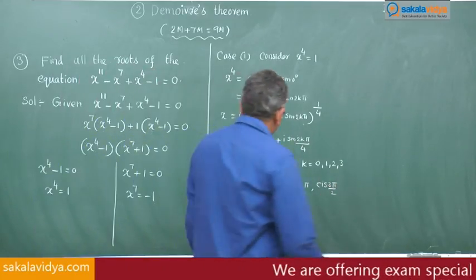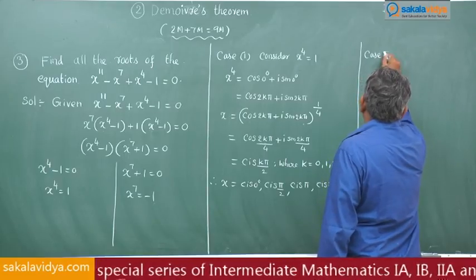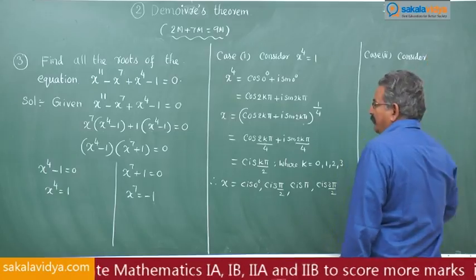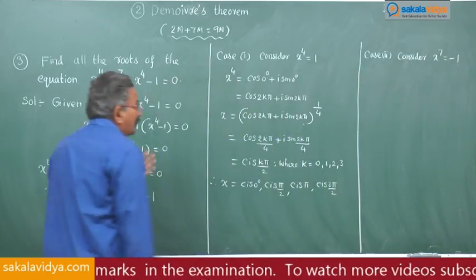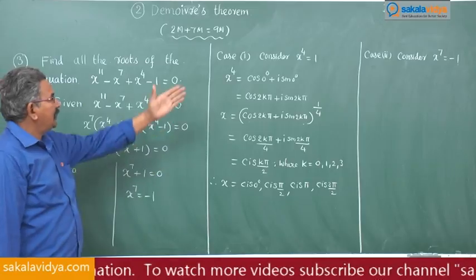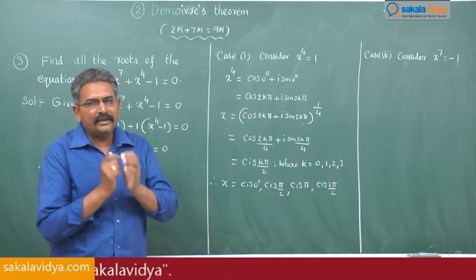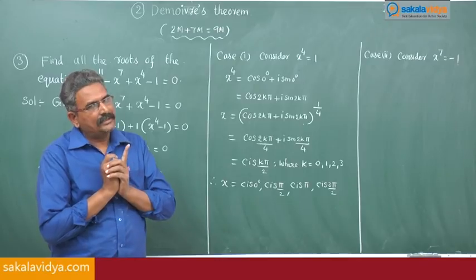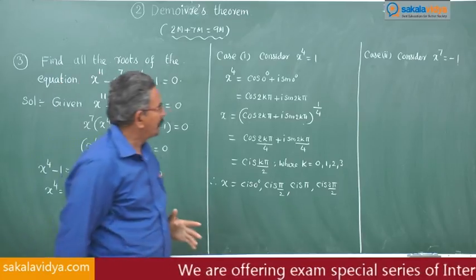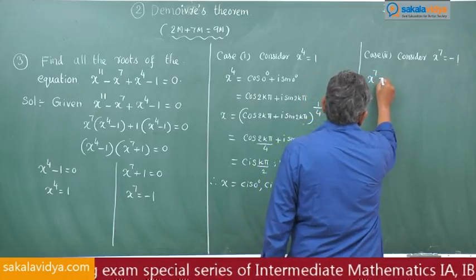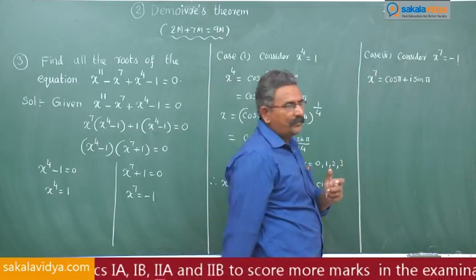Similarly, consider Case 2: x to the power of 7 is equal to minus 1. Just as in Case 1 we wrote cos 0 plus i sin 0 for 1, recall from the first module that minus 1 equals cos π plus i sin π. So we can write x to the power of 7 is equal to cos π plus i sin π. Let us write the general form.